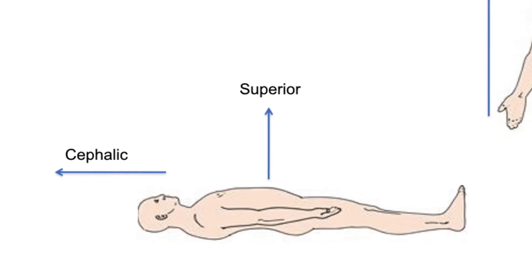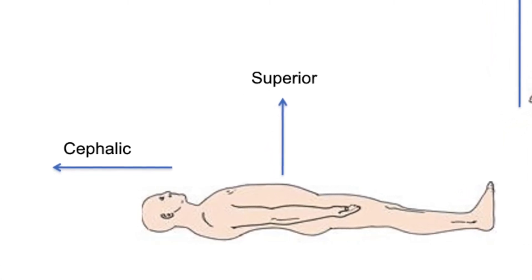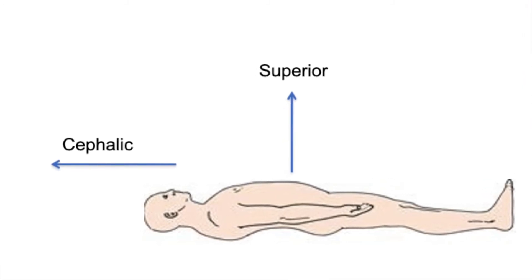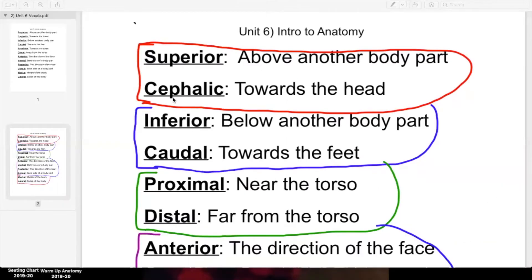If you roll over and you're lying on your belly, then your lungs are above your chest muscles now. So your lungs would be superior. So superior always means above. The definition never changes. Your body parts change. Cephalic, that changes the other way. Your body parts move around, but they never stop being cephalic.